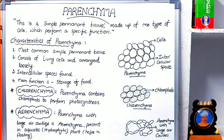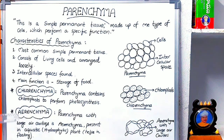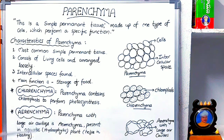Examples of hydrophytic plants include Lotus, Pistia, and Eichhornia — that is water hyacinth. In those hydrophytic plants, we can see aerenchyma tissue.